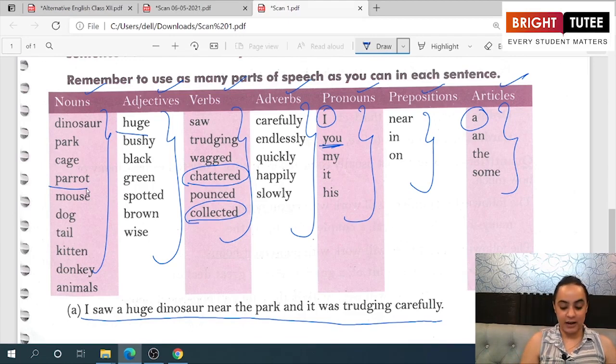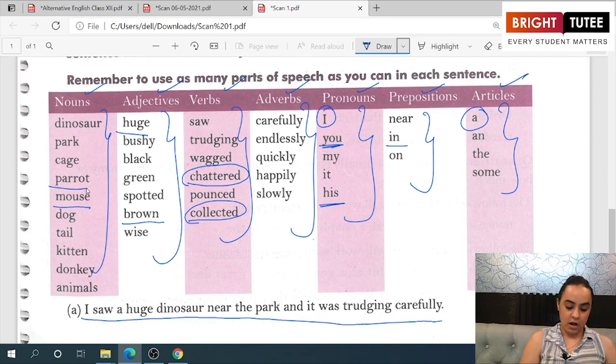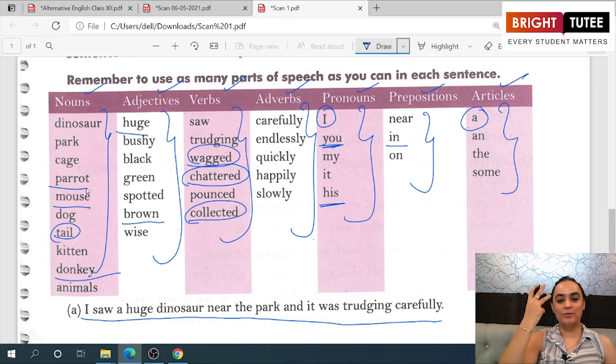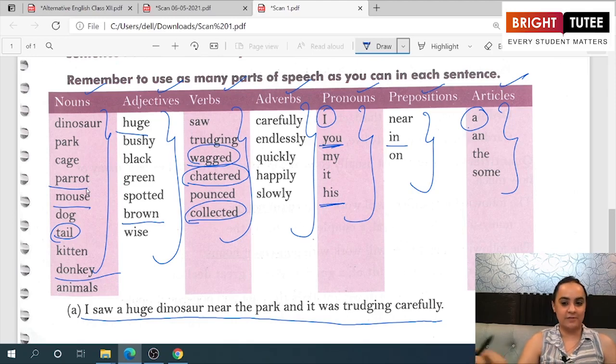If you frame another sentence: 'His mouse is brown in color and its tail wagged on seeing a monkey.' So his mouse is black or brown in color and wagged its tail when he saw a monkey.